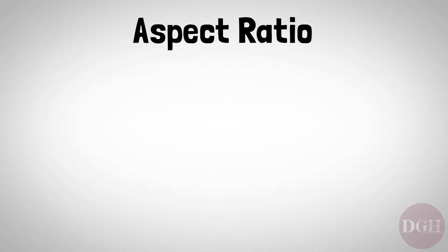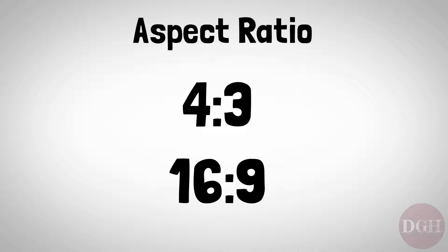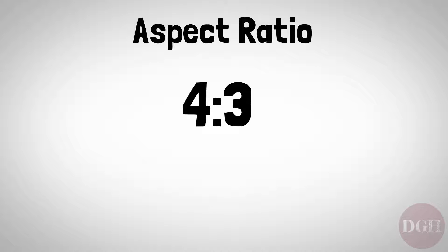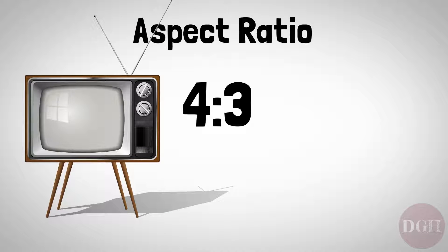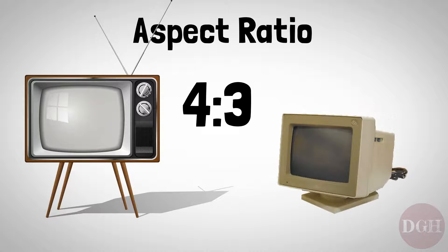Next, let's look at aspect ratio. Aspect ratio refers to how wide a display is relative to its height, and is expressed using two numbers, pronounced as 4x3 or 16x9. The first number refers to width and the second refers to height, so a 4x3 display is just slightly wider than it is tall. 4x3 is the aspect ratio of the original television format — older TVs, older television programs, and VHS movies are in 4x3 format. Many older computer monitors, and even some new ones, are also in 4x3 format.